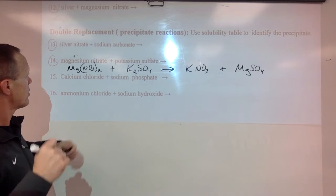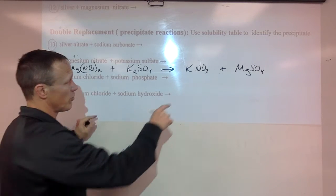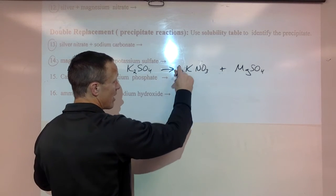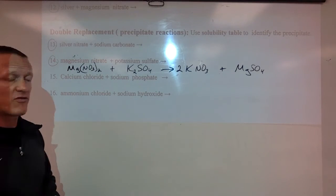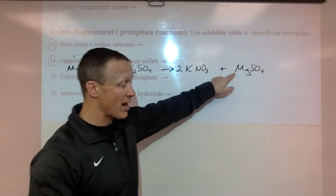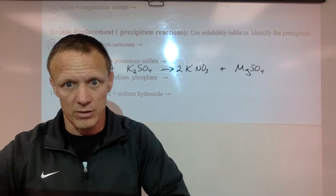If we balance this, we've got two of these NO3 groups. Only one of this NO3 group here so we need to double that. It gives us two Ks and two Ks and everything else is equal. Now if we identify the precipitates, we're looking at our products that are made and figuring out which one is insoluble.